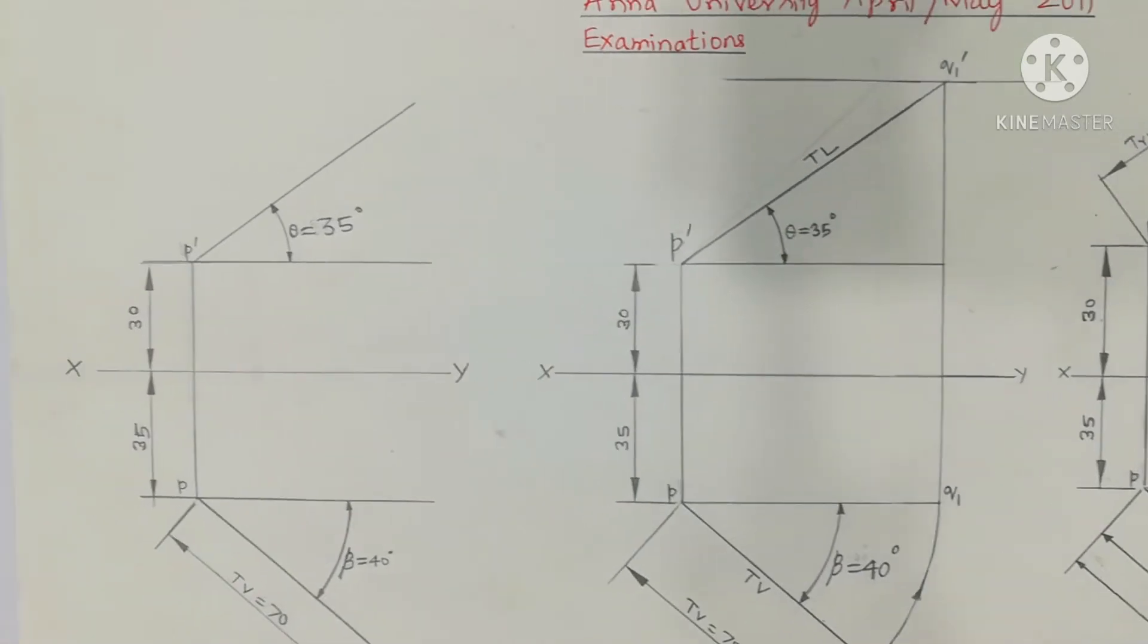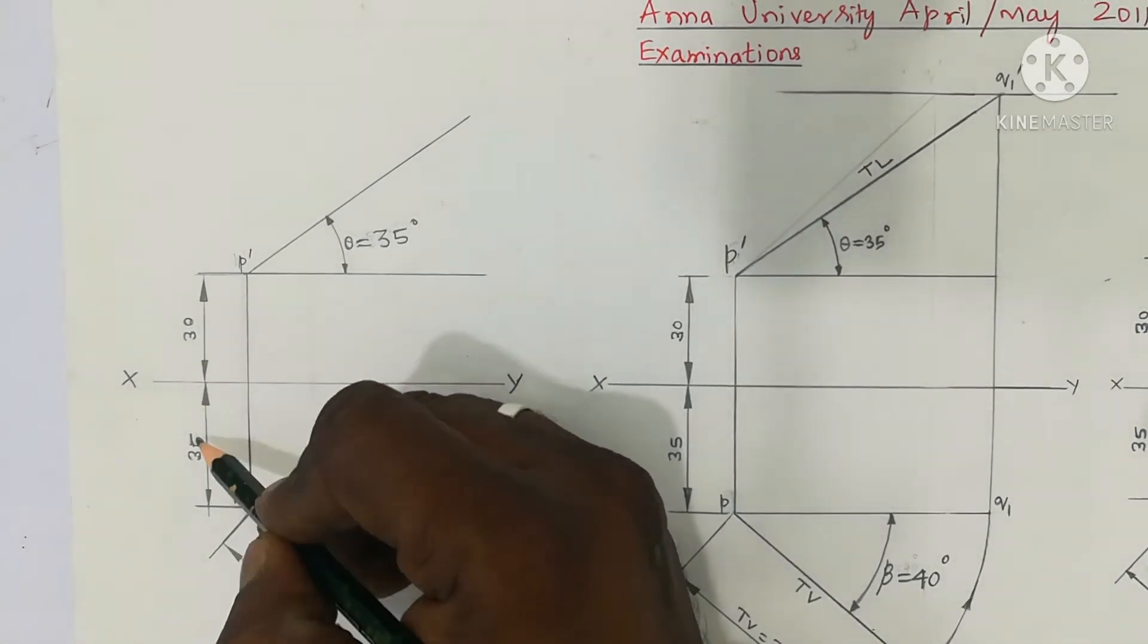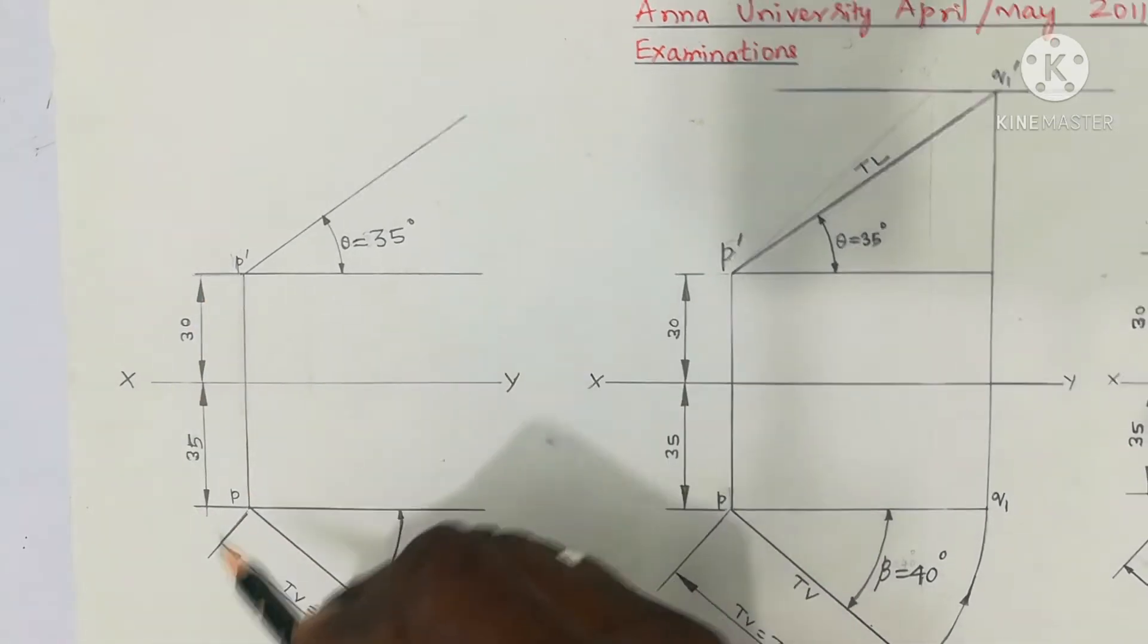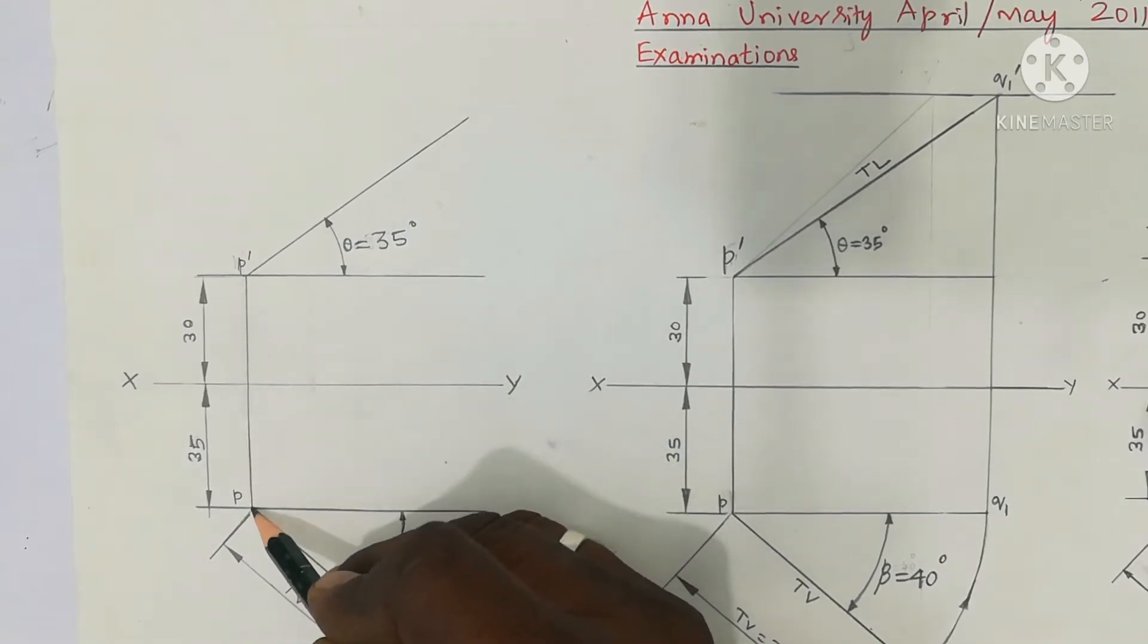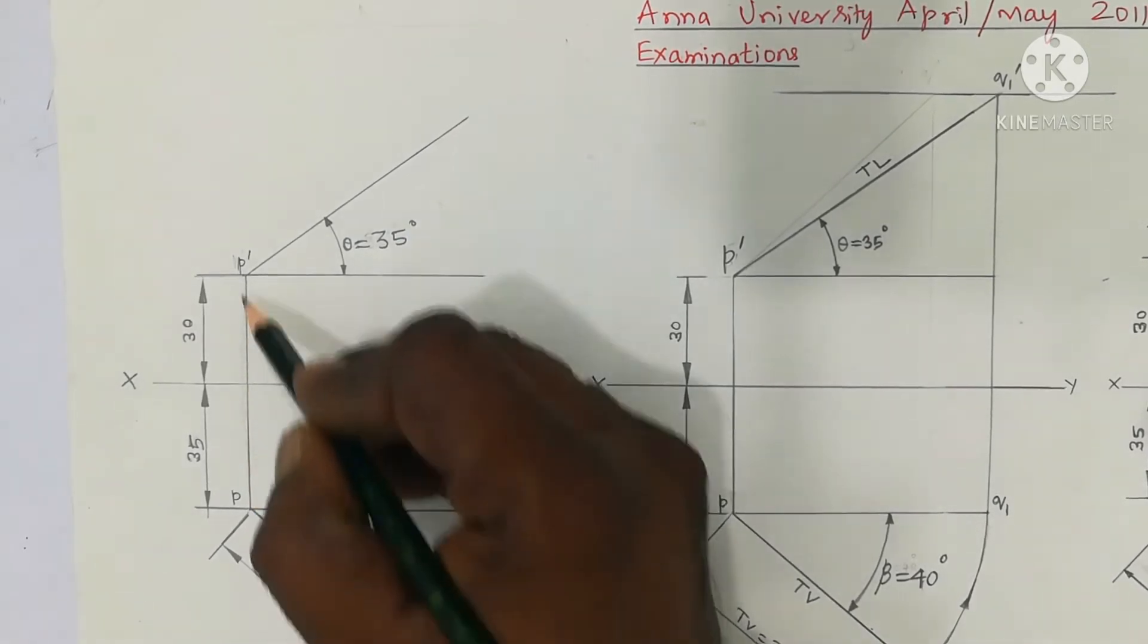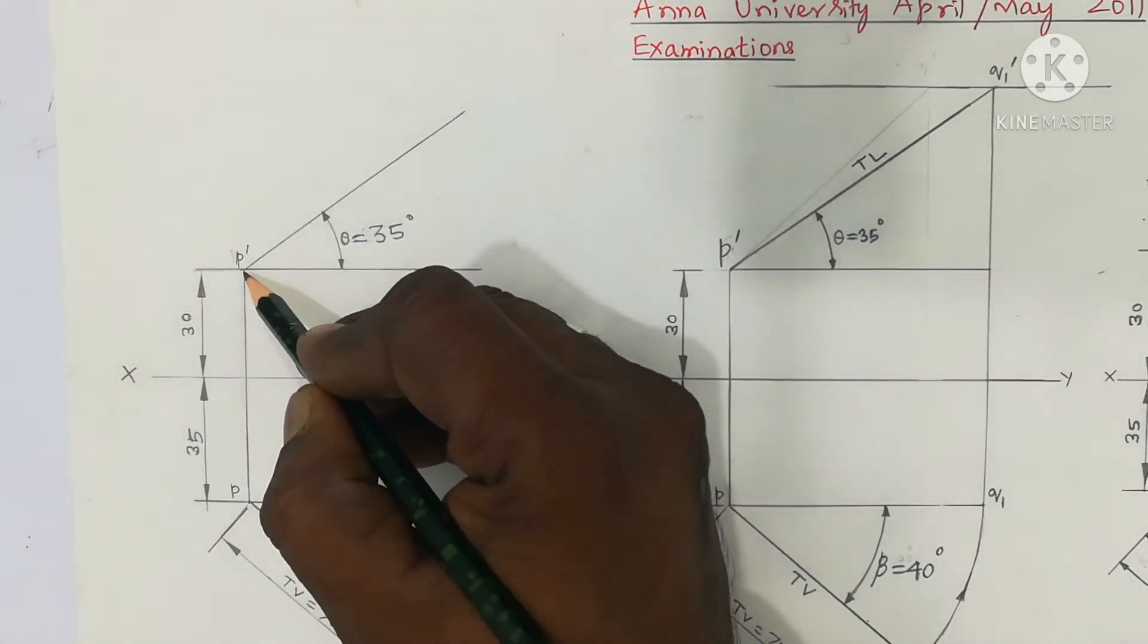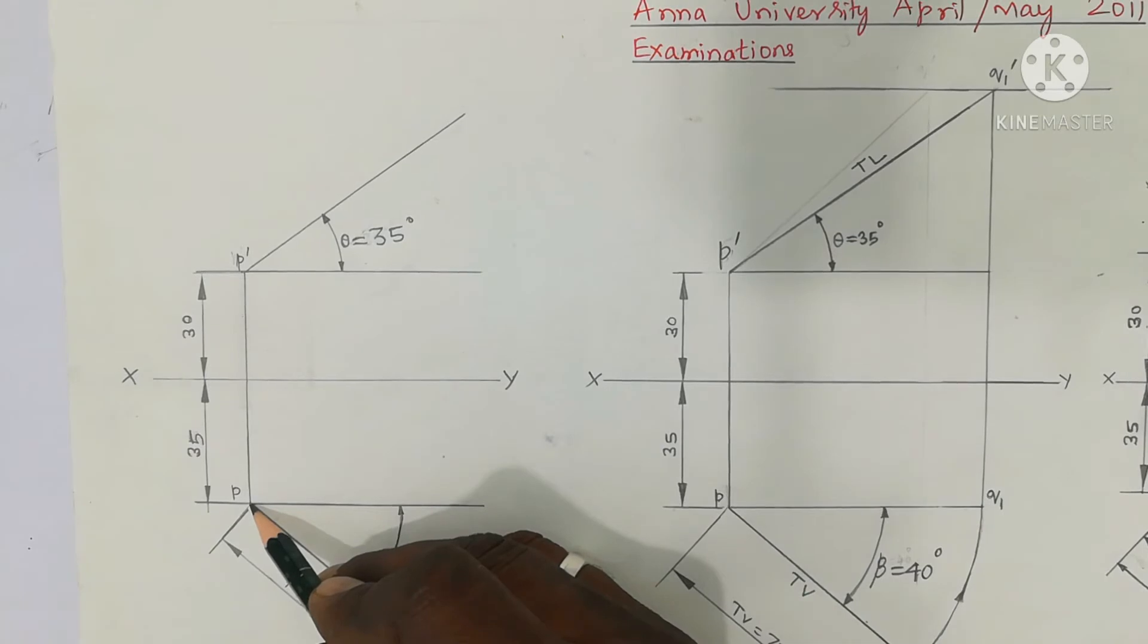First distance above the HP. One end point P is 30mm above the HP and 35mm in front of VB. 30mm above the HP, 35mm in front of VB. In front of VB is the distance of one end point P dash. That is P and P'. If the top view is P dash, it is a small letter P.